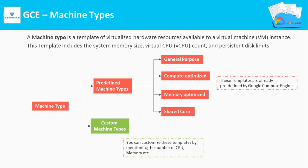Next is machine types. A machine type is a template of virtualized hardware resources available to your virtual machine instance. This template includes the system memory size, the virtual CPU count, and the persistent disk limits. Machine types are classified into two types: predefined machine types, which are templates already defined by Google Compute Engine, and custom machine types, where you specify the number of CPUs, memory, and disks yourself. Based on the amount of virtual hardware, predefined types are grouped into families: general purpose, compute optimized, memory optimized, and shared core.